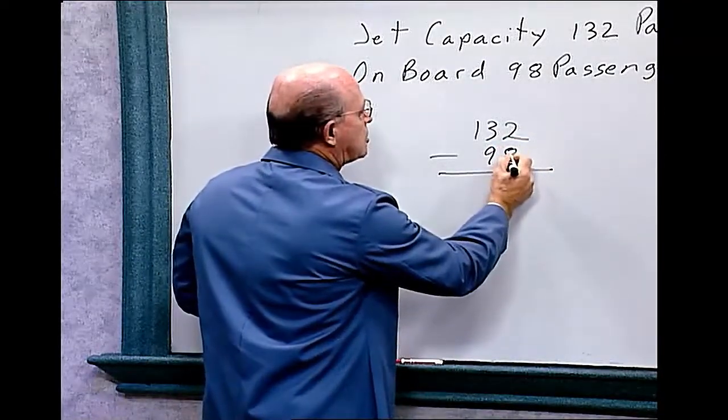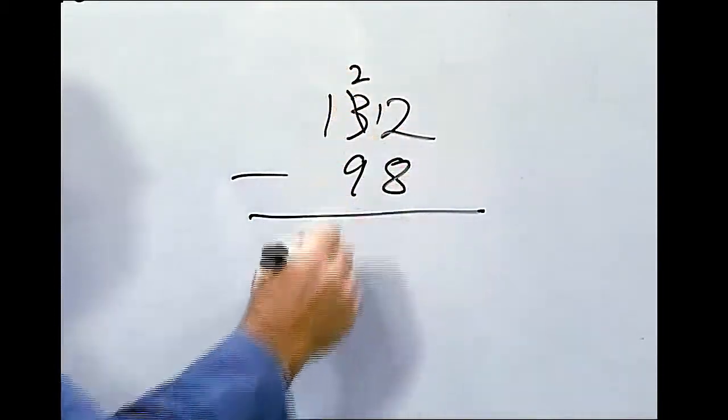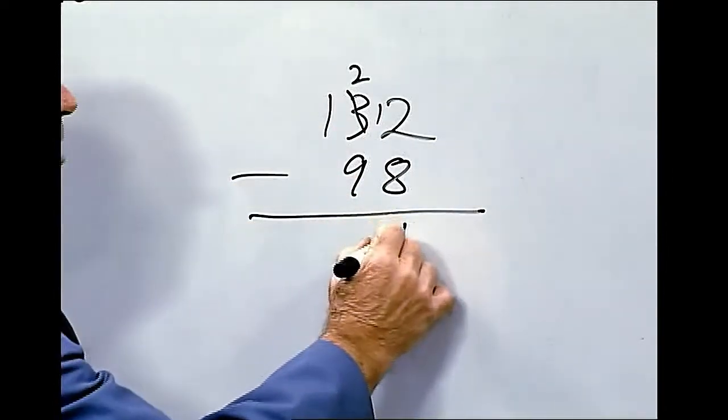We can't deduct the eight from the two, so we have to borrow from the tens column. Makes that a two and a one. Now we can subtract 12 minus eight equals four.